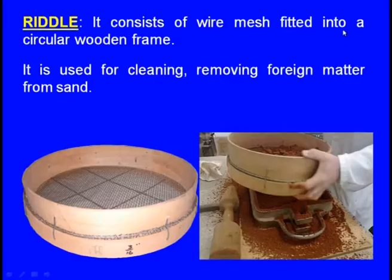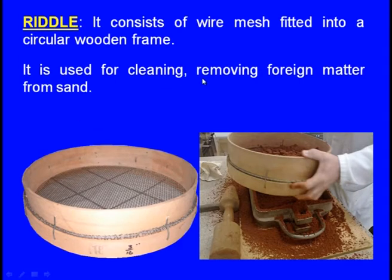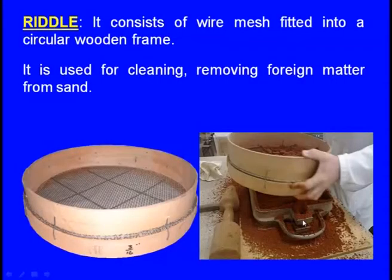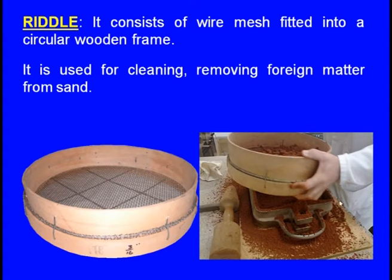Next, riddle: it consists of wire mesh fitted into a circular wooden frame. It is used for cleaning and removing foreign particles from the sand. Instead of placing moulding sand directly, it is first passed through the riddle so that foreign particles and hard lumps are eliminated, and only smooth sand falls into the moulding box.